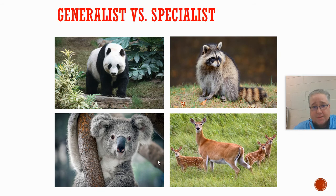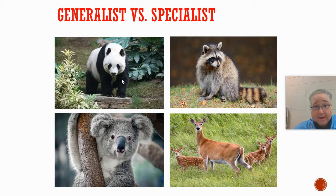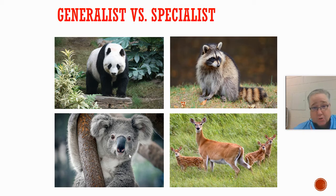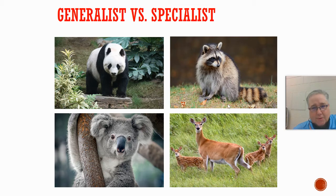Here are some pictures of different organisms. For example, a panda bear — panda bears are really only found in one area of the world, they live in China, and they're very specific about what they eat: bamboo. So these would definitely be a specialist species. Koala bears live mainly in Australia and eat eucalyptus plants, which are a very specific species of plant — also a specialist species. Think about deer or raccoons — we find these pretty much all over the country. They eat a variety of different things, reproduce fairly quickly, and have a high tolerance for temperatures. So these would be more of a generalist species.